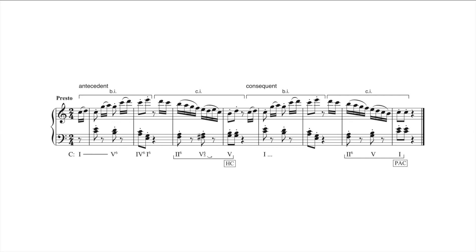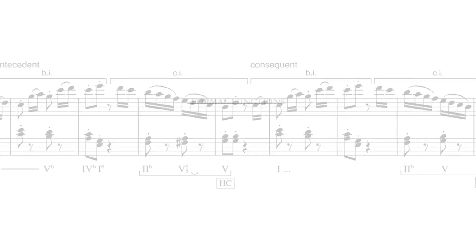In summary, the sentence and period are theme types made up of formal functions which represent ways of beginning, being in the middle, and ending.